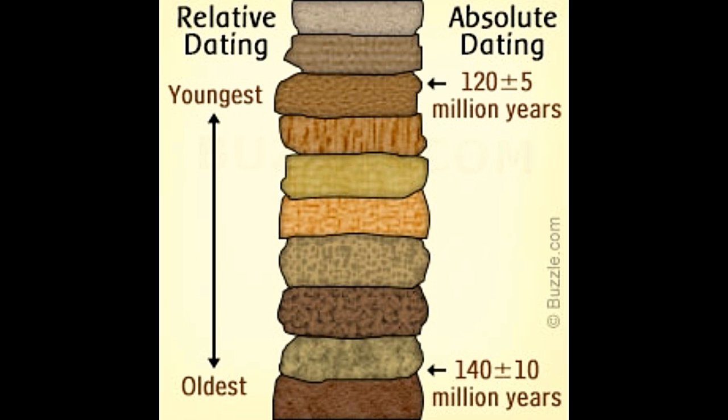Geological specimens that are unearthed need to be assigned an appropriate age. To find their age, two major geological dating methods are used. These are called relative and absolute dating techniques. Absolute dating, also called numerical dating, arranges the historical remains in order of their ages. Whereas relative dating arranges them in the geological order of their formation.